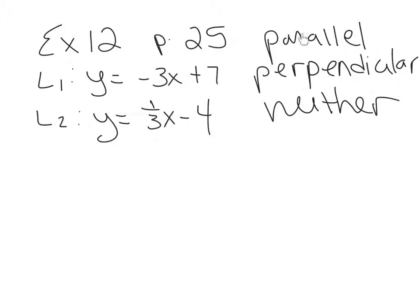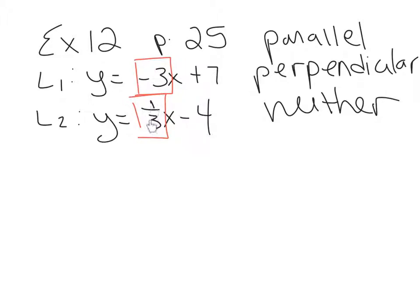To determine the relationship, we compare slopes. These two lines are already in y equals mx plus b — slope-intercept form. The slope of line 1 is negative 3, and the slope of line 2 is 1 third. These are not the same number, so they're not parallel. But one's negative, one's positive, and 3 and 1 third are reciprocals — they are opposite reciprocals. So these two lines are perpendicular.